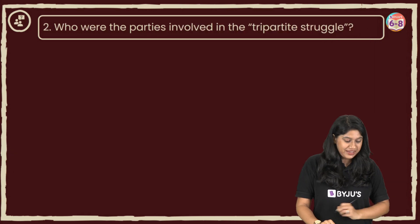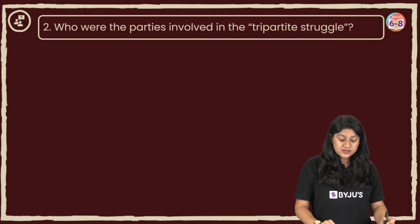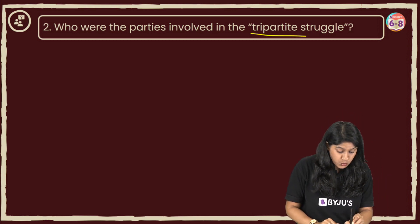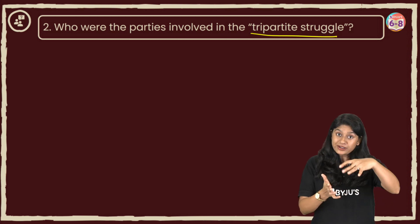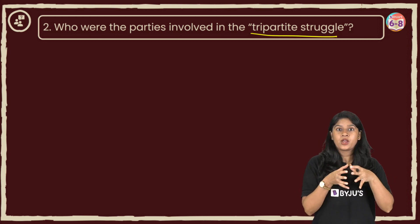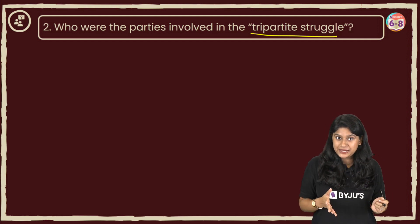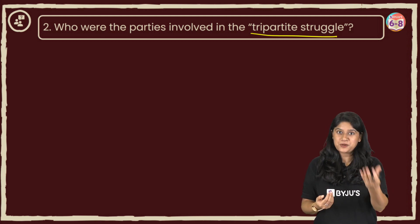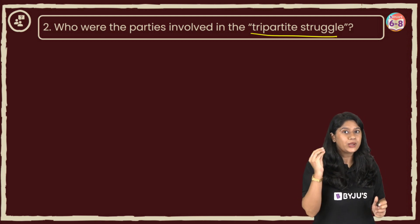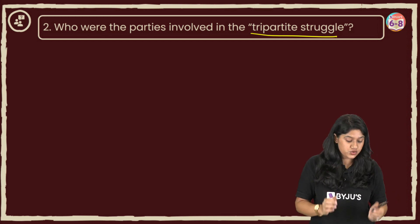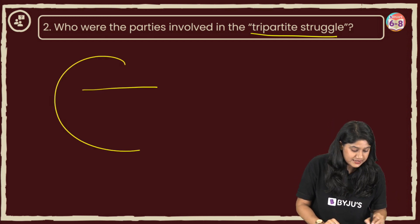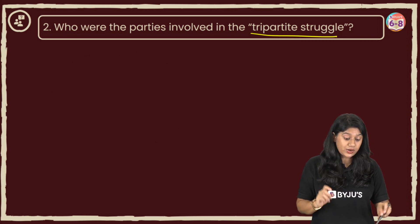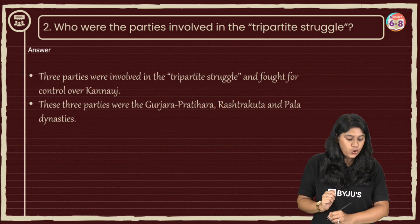Moving to question number two: who were the parties involved in the tripartite struggle? This is a very important question. We are talking about three different dynasties who were struggling or fighting for one particular place. We know that place was in Uttar Pradesh — the city of Kannauj. They wanted to capture that city and there are three parties involved and the question is asking us to write those names.